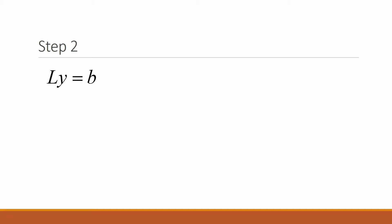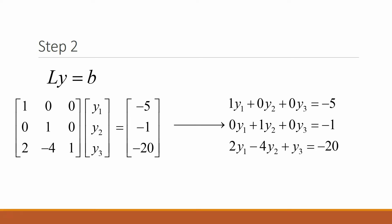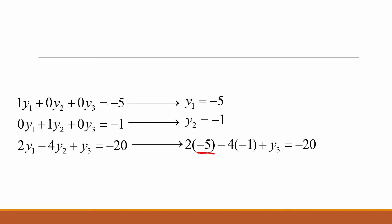Step two: let L times Y equal B and solve for Y. L is our lower triangular matrix, Y is the unknown vector, and B contains the right-hand side values of the linear system. By converting the matrices into a linear system, equation one simplifies to Y₁ equals negative five, equation two simplifies to Y₂ equals negative one, and using back substitution with those values, equation three simplifies to Y₃ equals negative 14. Rewrite this in matrix form so that Y equals the matrix shown.